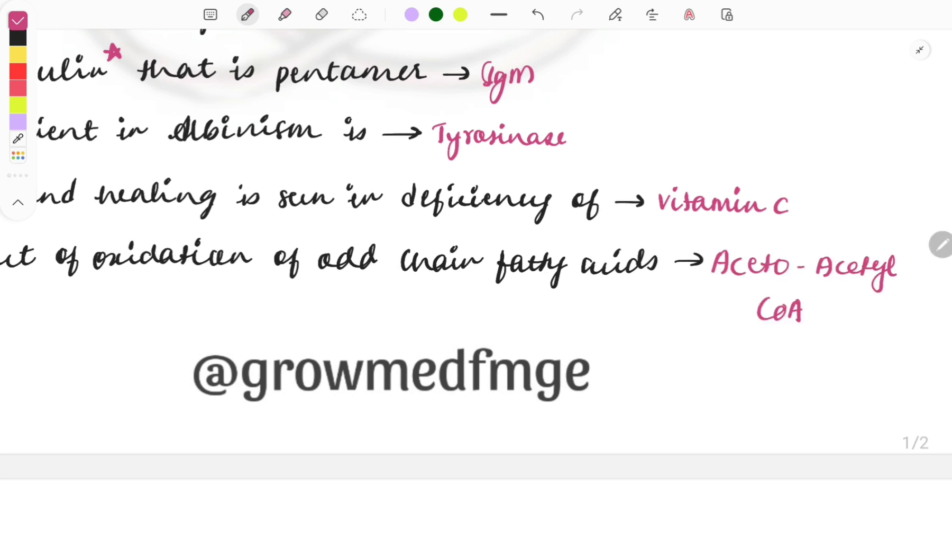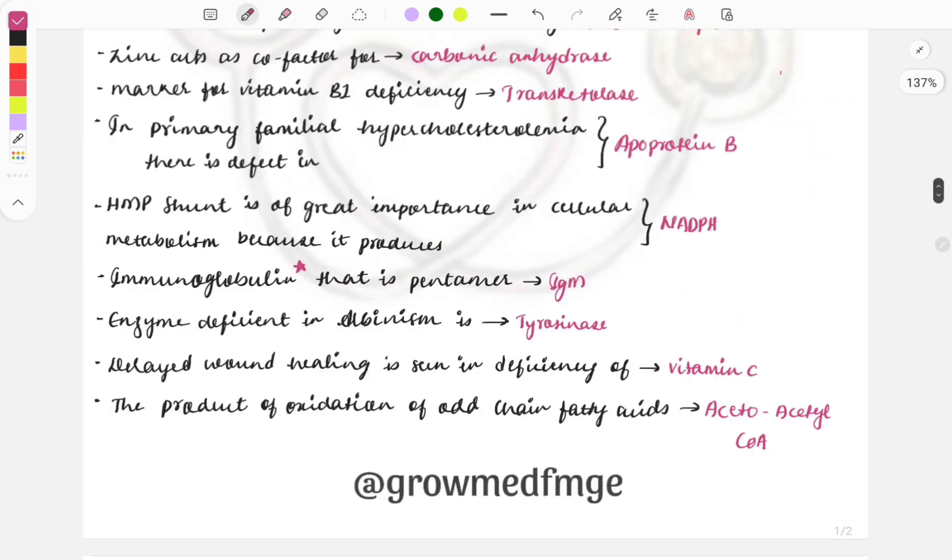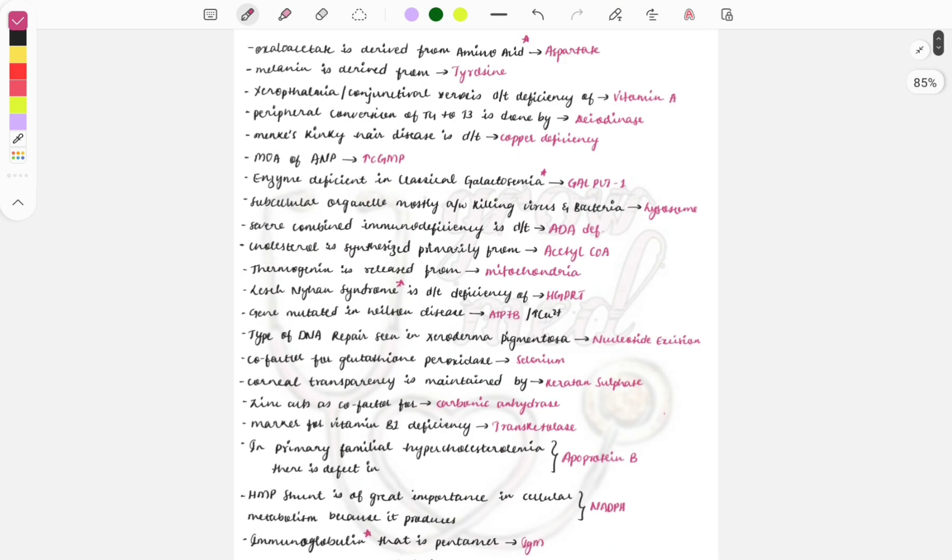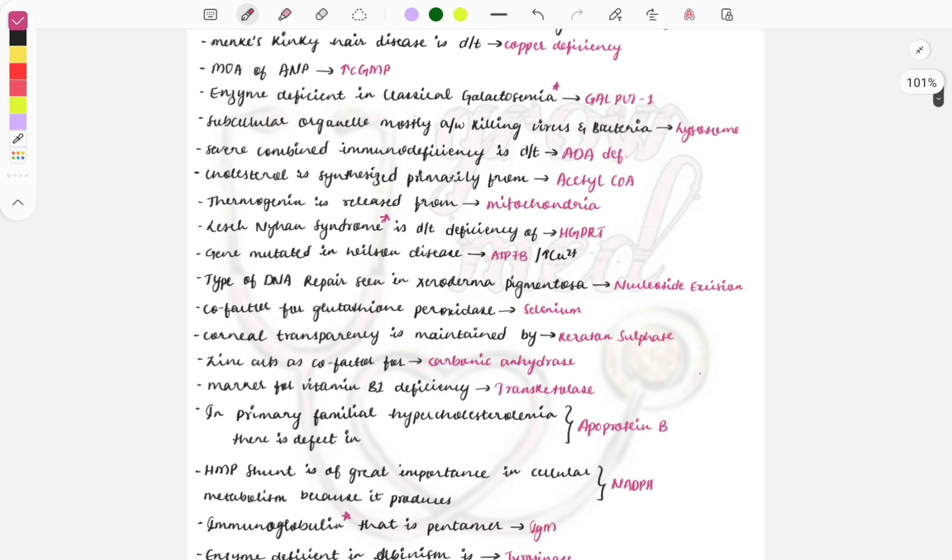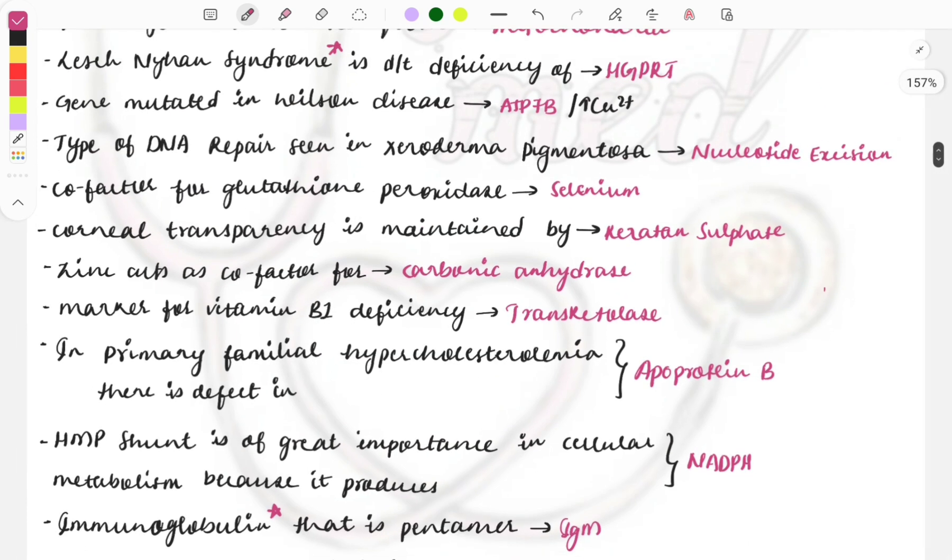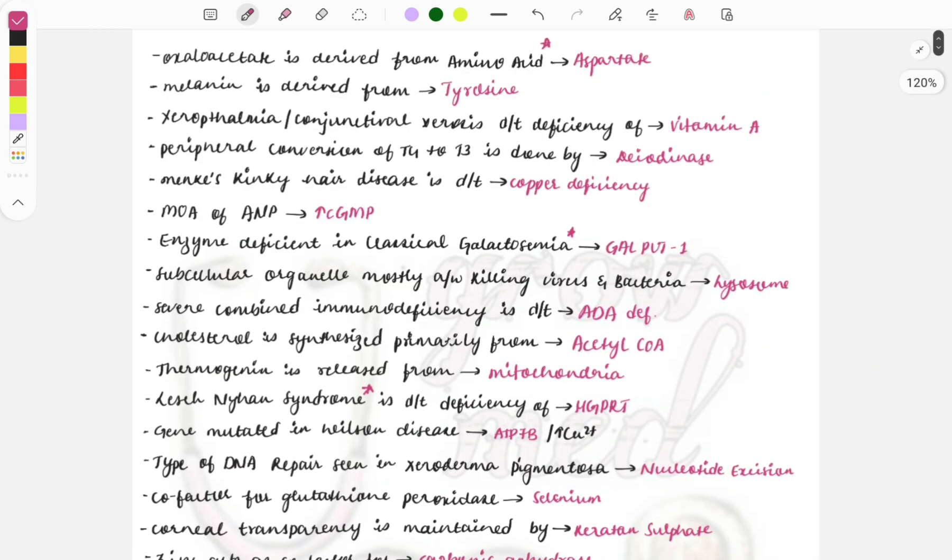The product of oxidation of odd-chain fatty acid is acetoacetyl coenzyme A. These are some important one-liners asked in biochemistry. We have discussed the important things you must know - the amino acids, the glycogen storage diseases that is also important, Lesch-Nyhan syndrome, the immunoglobulins, the cofactor for enzymes - all these things are must-do topics.